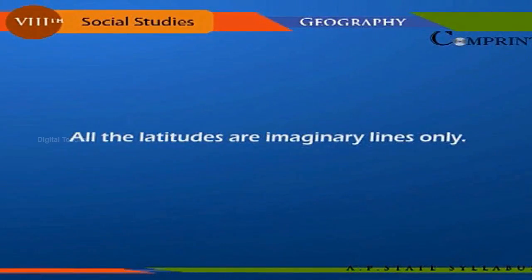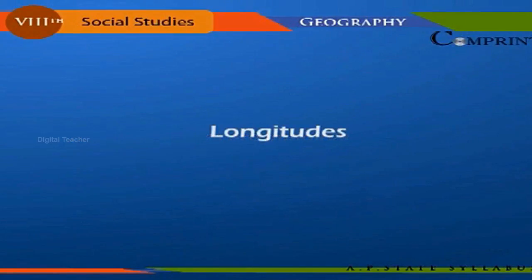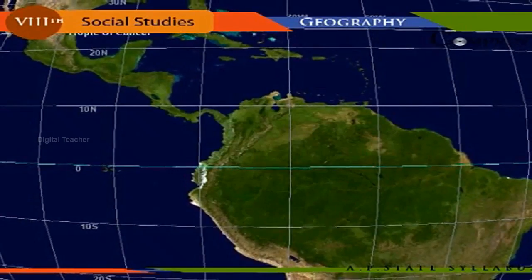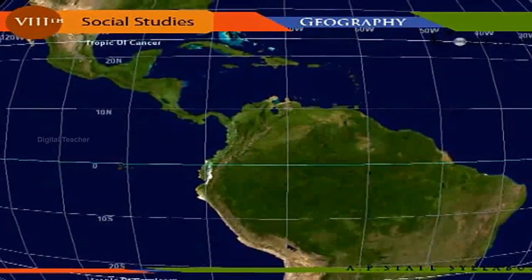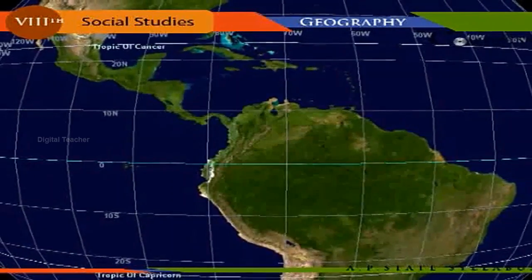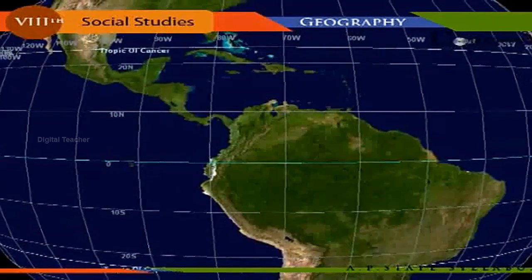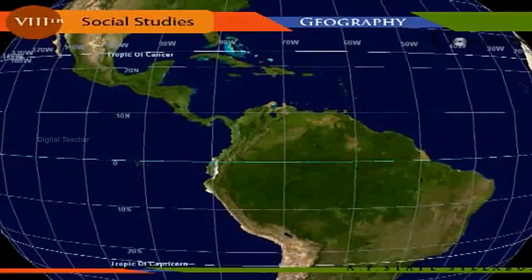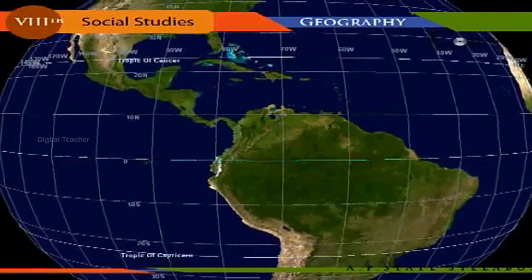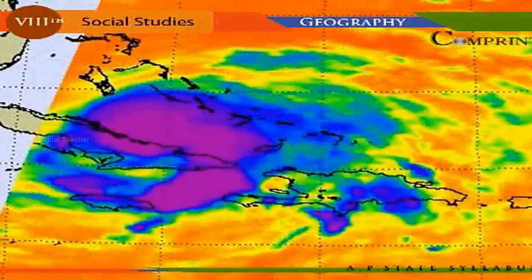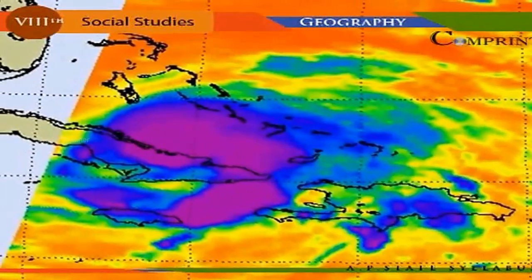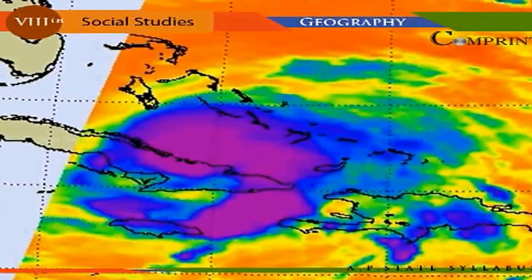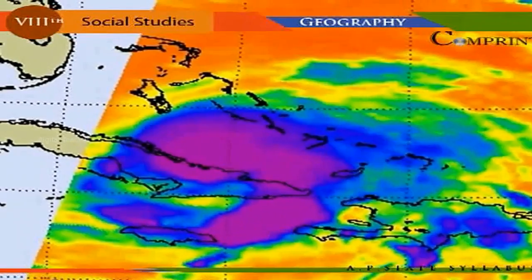Longitudes: the circles drawn across the globe passing through the poles and intersecting the equator are called circles of longitudes. In fact, the semicircles that lie between two poles are considered longitudes. All places situated on any longitude experience midday at a single point of time; hence longitudes are also known as meridians.